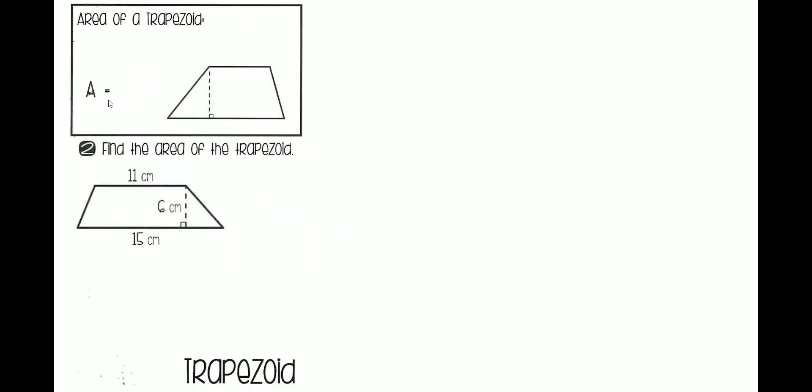Moving on to the trapezoid, this is a long formula. It's base 1 plus base 2 times the height divided by 2. It seems complicated, but it's not that bad. So base 1 and base 2.